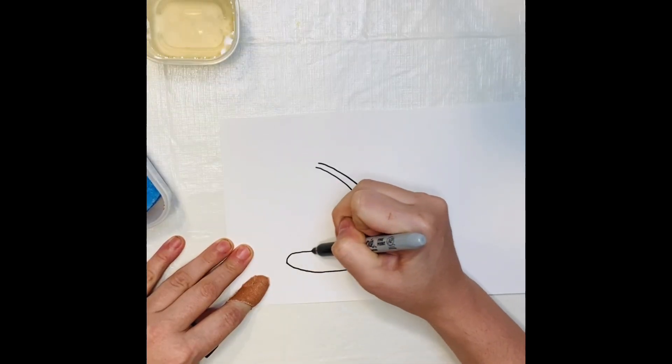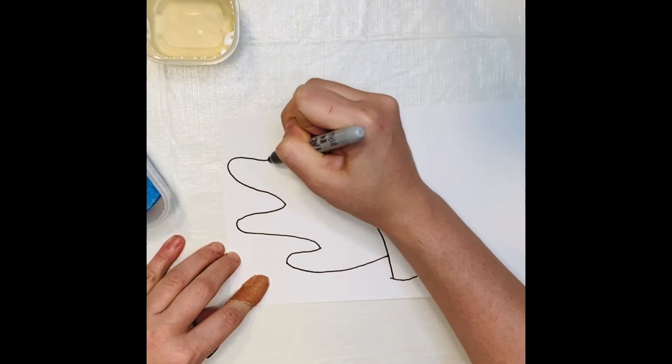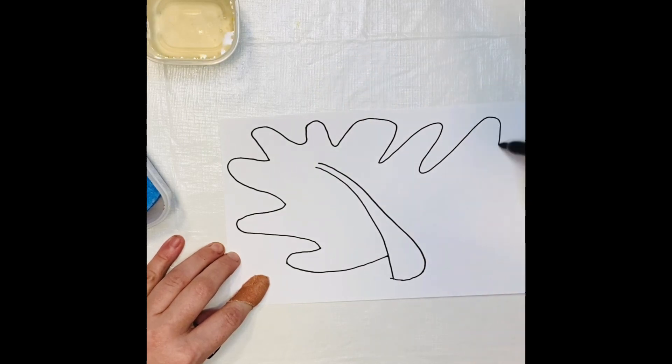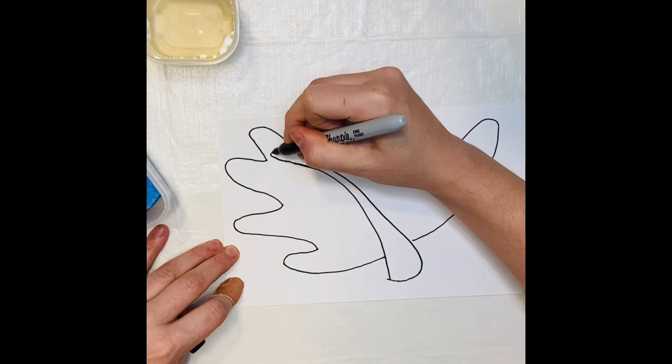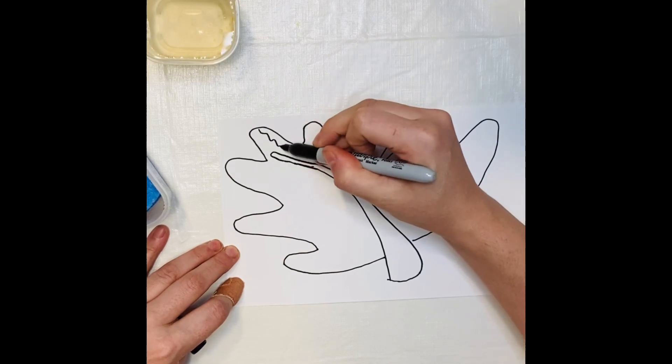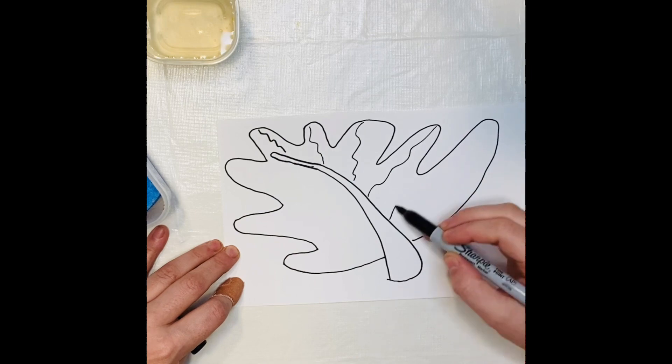I'm going to make another leaf now, but this one's going to be a different shape. This one is going to have lots of curved lines, and I'm going to make it as irregular as possible. The less perfect my lines are, the more real and authentic my leaf will look.